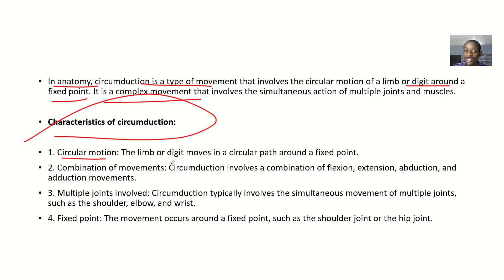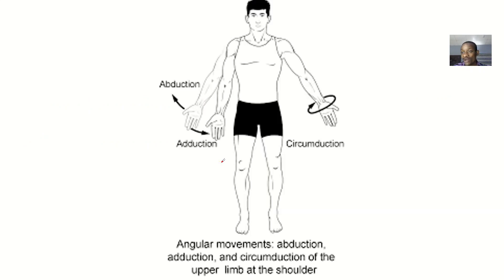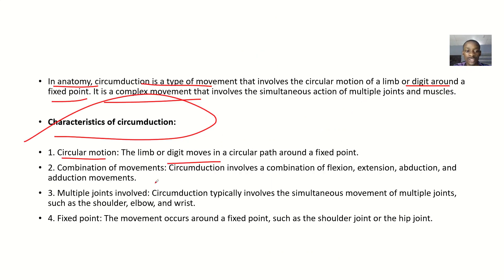The limbs or digits move in a circular path around a fixed point. A combination of movements occurs - as you move in a circular pattern, you are flexing, extending, abducting, and adducting. This combination of flexion, extension, abduction, and adduction gives what is known as circumduction.